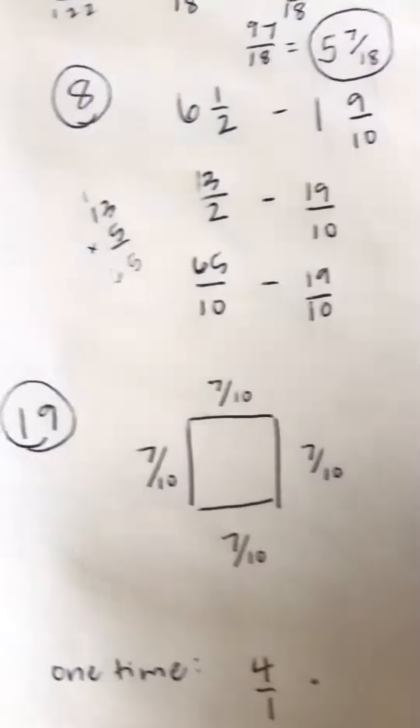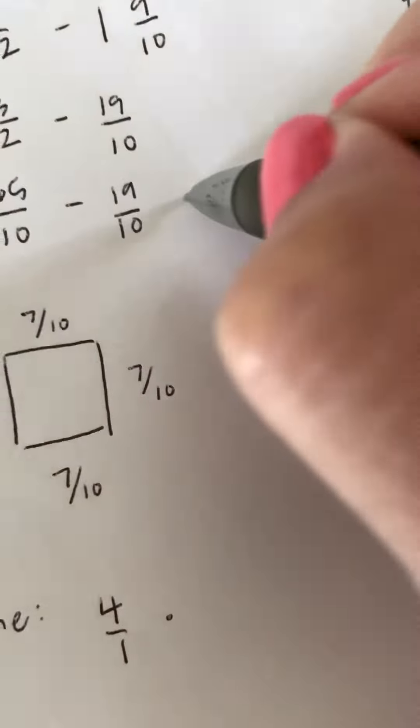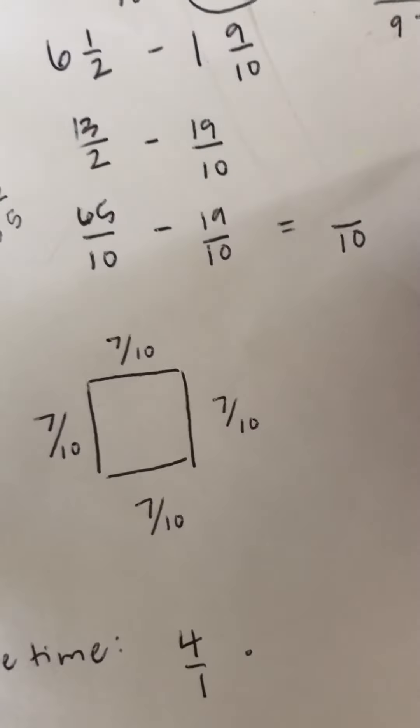We're subtracting those. So now our denominator remains the same, 65 tenths minus 19 tenths. So the denominator would be 10, and then 65 minus 19.